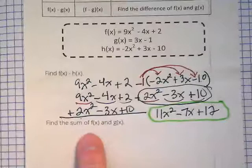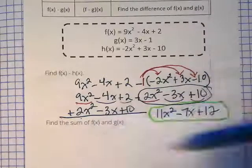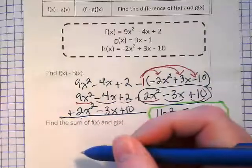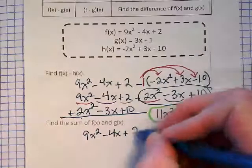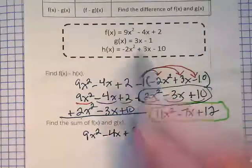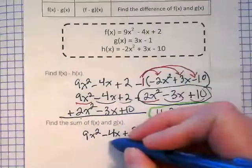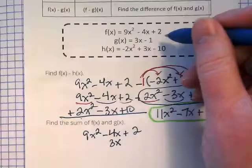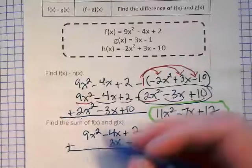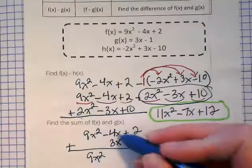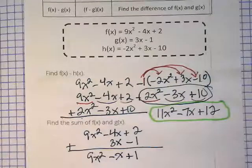This one is saying find the sum of f of x and g of x. We have our f of x here, our g of x here. Sum means that we're adding them. 9x squared minus 4x plus 2. And then I'm going to take my g of x, since I'm adding these two together, since I'm finding the sum, I'm just going to line them up underneath. 3x gets lined up underneath the negative 4x, and minus 1. And I'm going to add those together. This has no like terms, so it stays as is. Negative 4x plus 3x gives us negative x plus 1. And there's our solution.